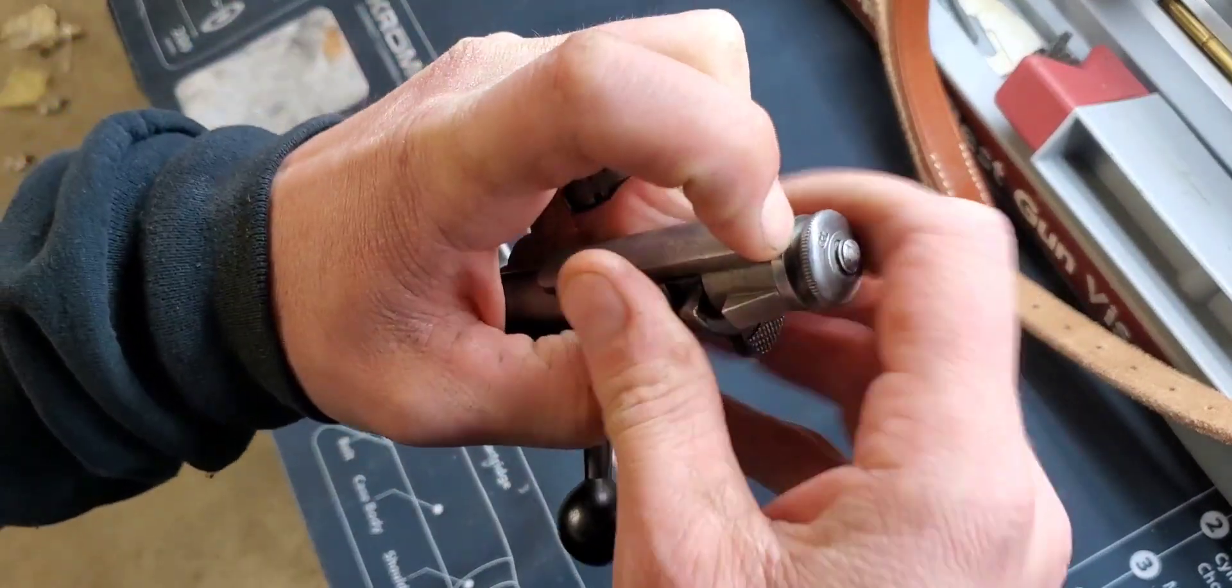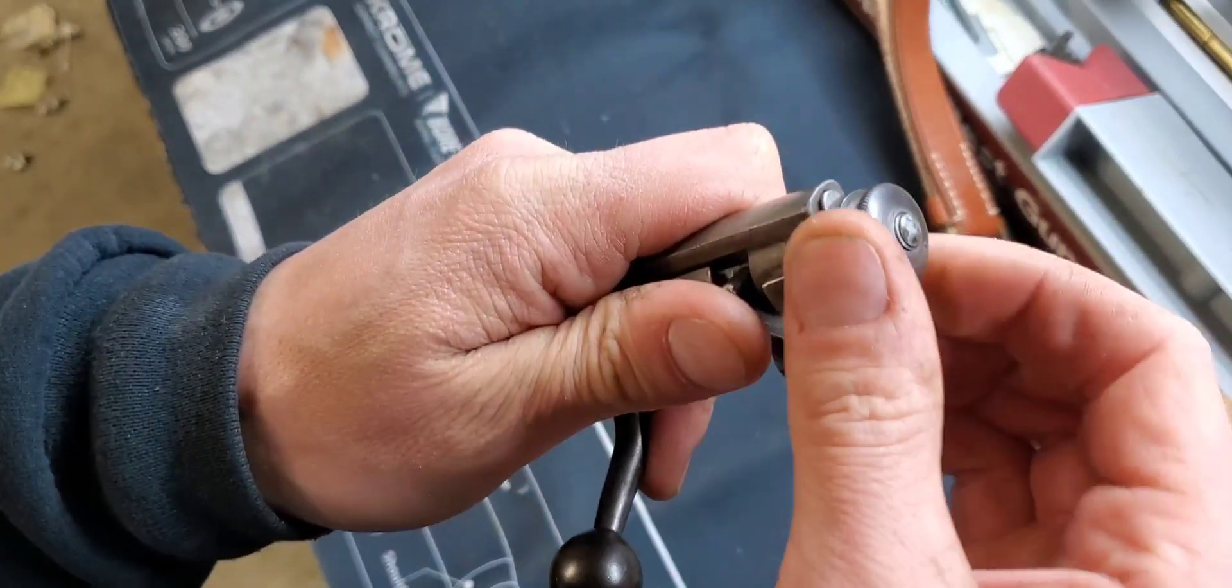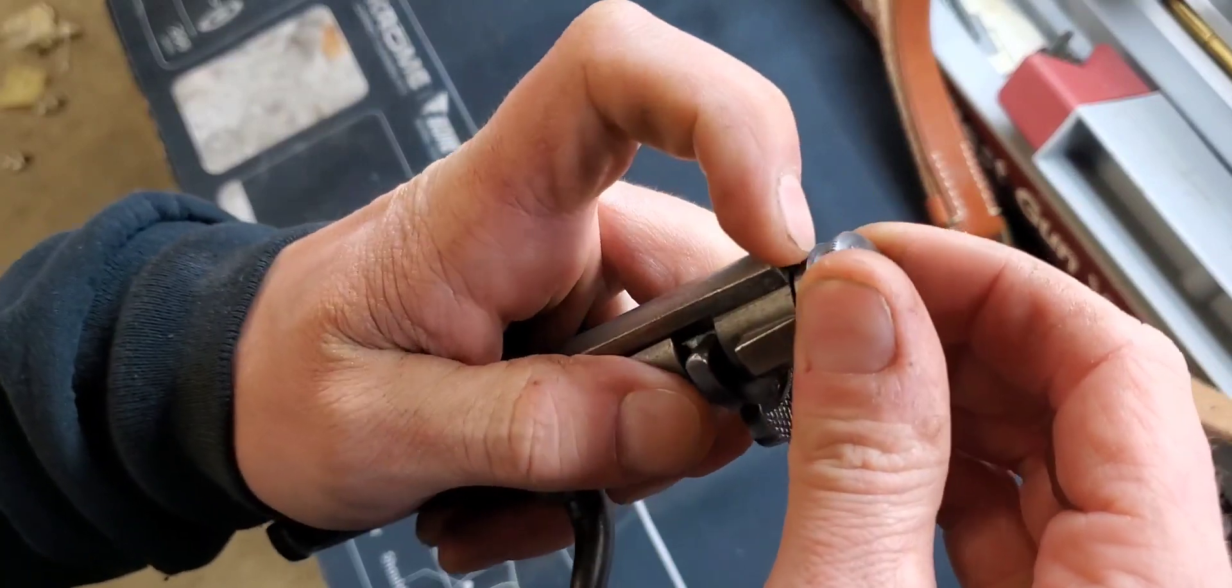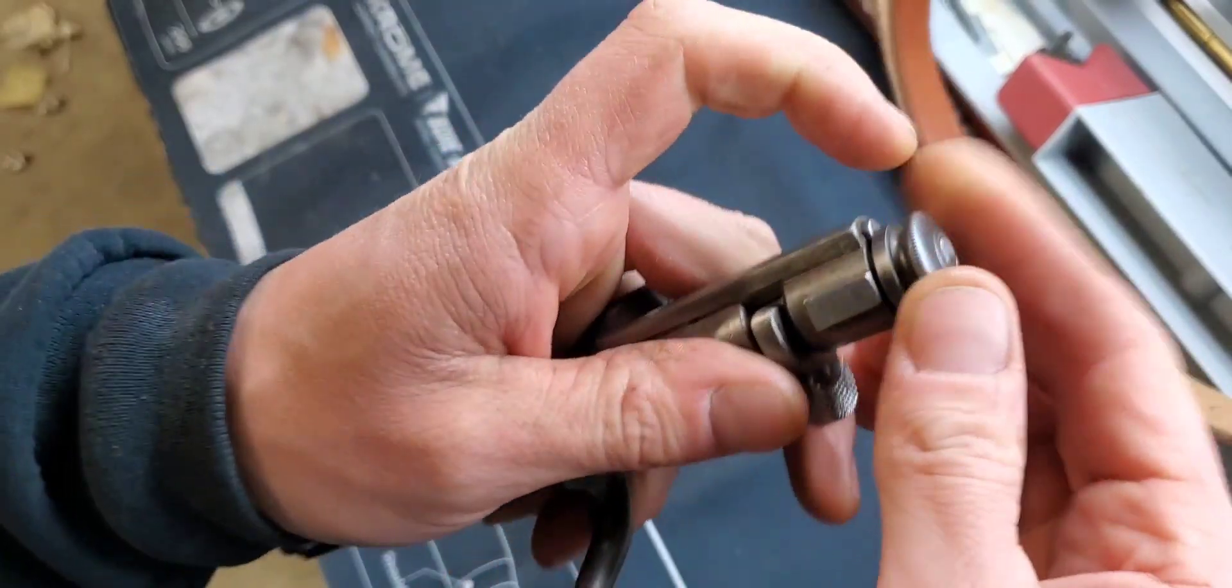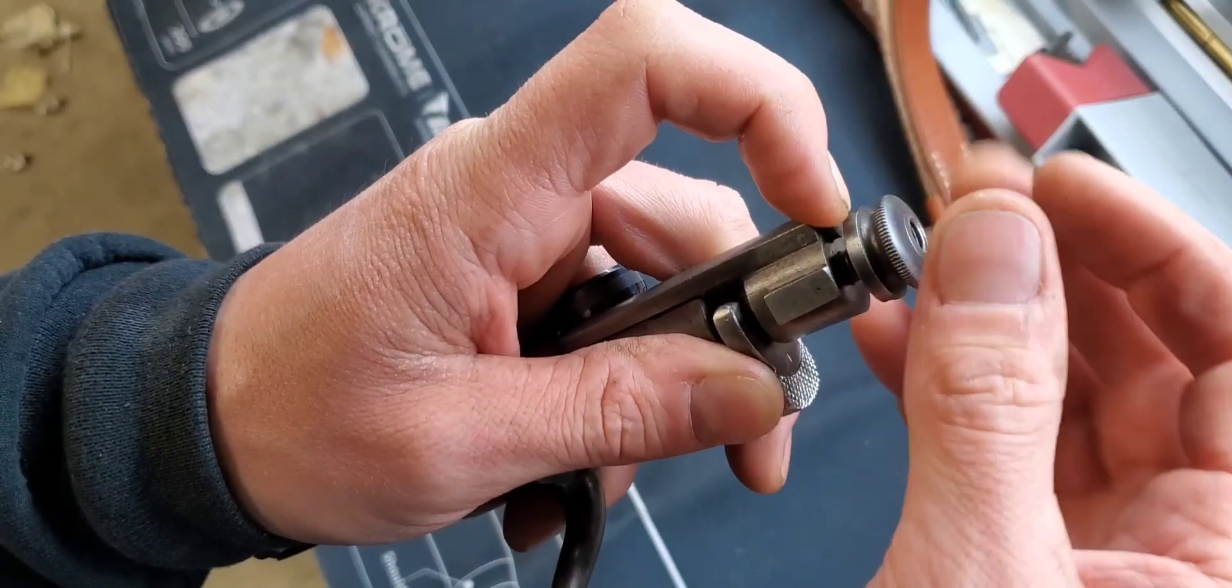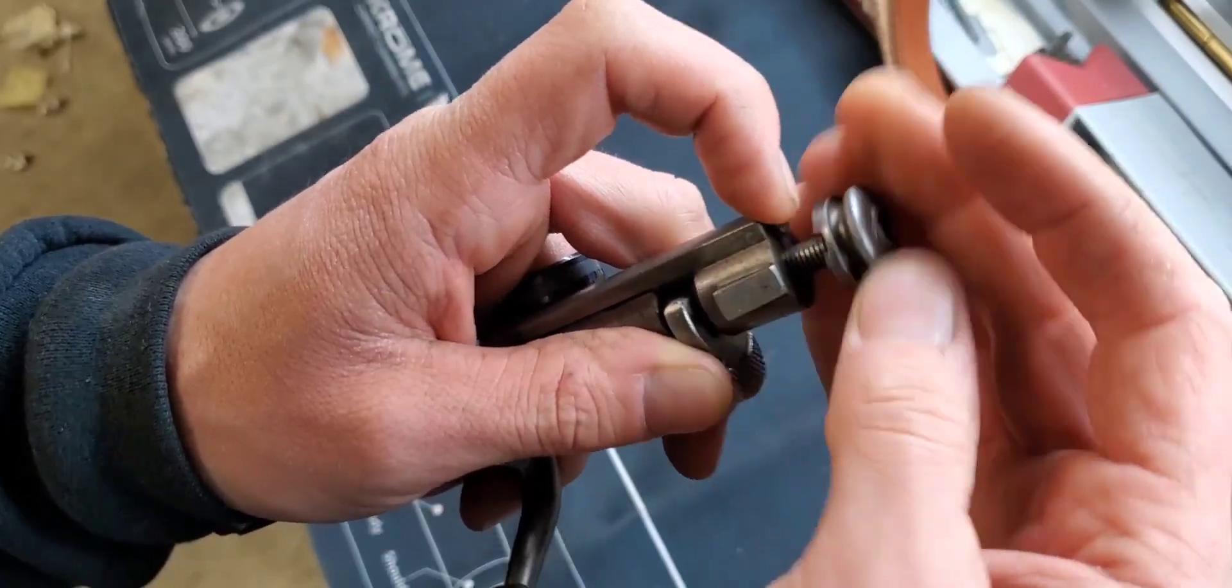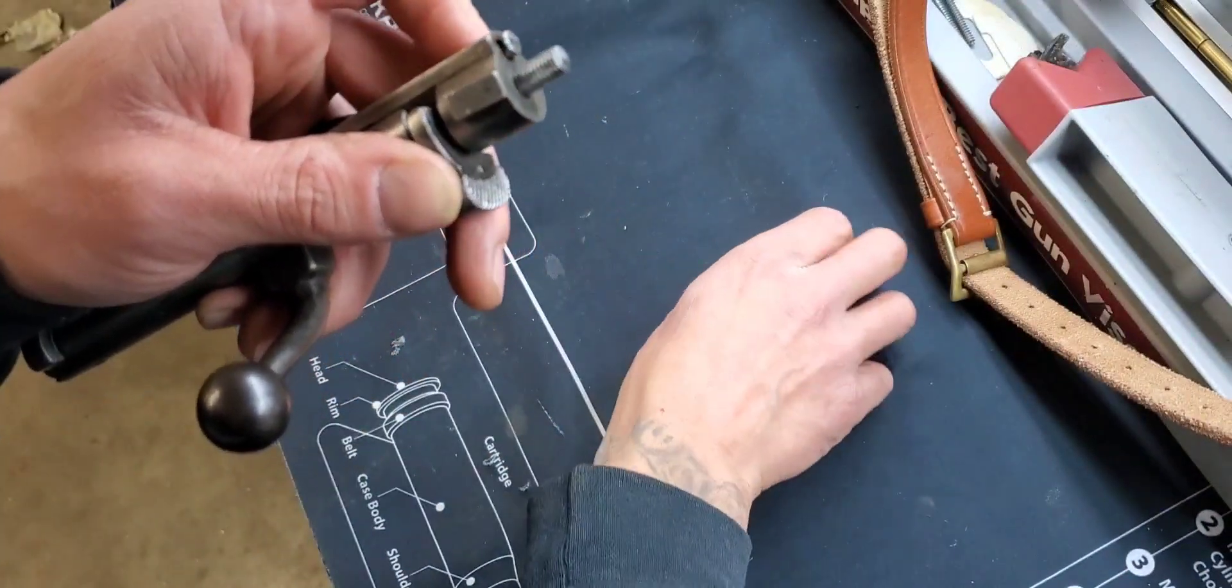Now we're gonna go ahead and depress this detent here and turn the knob. Now if you just got your Carcano this might be a little gunked up. You might need some penetrating oil up in there and let it soak overnight to get it loosened up.